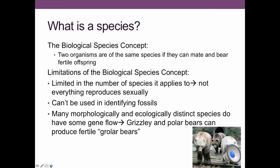It also can't be used with fossils because we can't tell whether two things could mate and bear fertile offspring — it's hard to watch dead things mate. And many morphologically and ecologically distinct species do have some gene flow, so that classification doesn't always work.